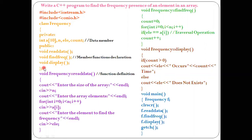Every C++ program execution starts from the void main function. This particular line creates an object — 'frequency' is the name of the class and 'f' is the user-defined object. Once you create an object, it allocates memory for the data members, and using this object we can access all the member functions: readData, findFrequency, and display. The next line, clrscr, clears the screen.